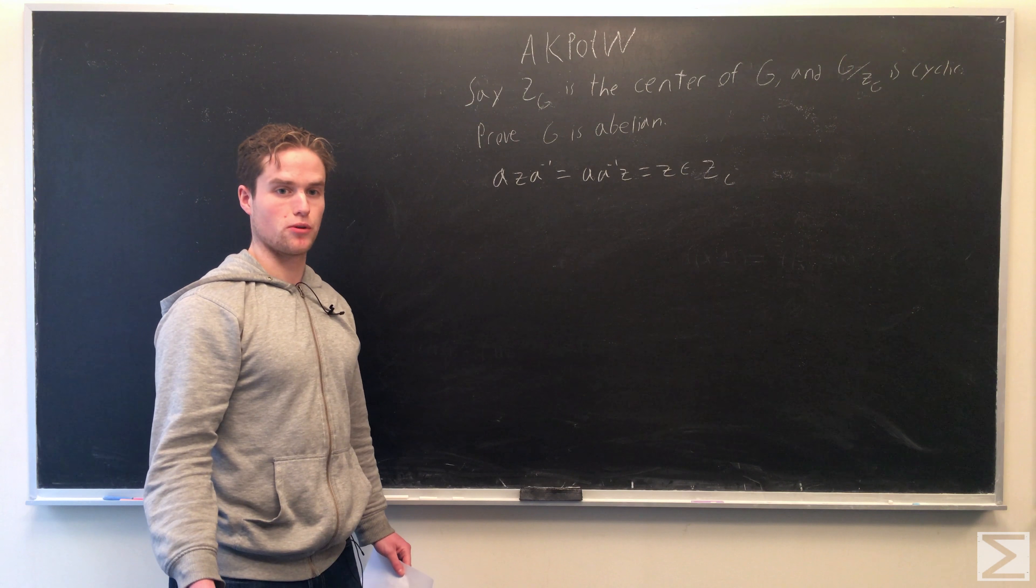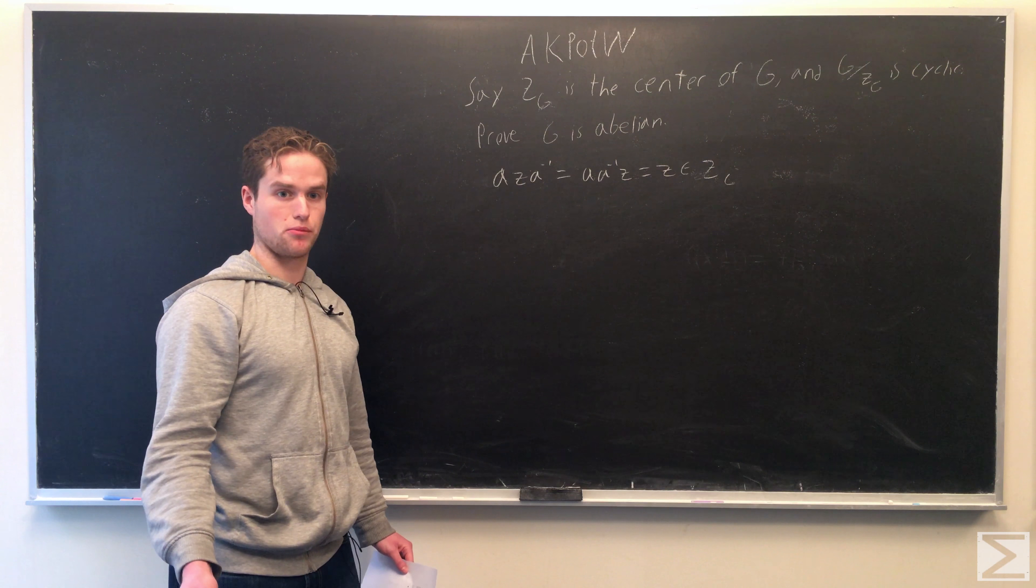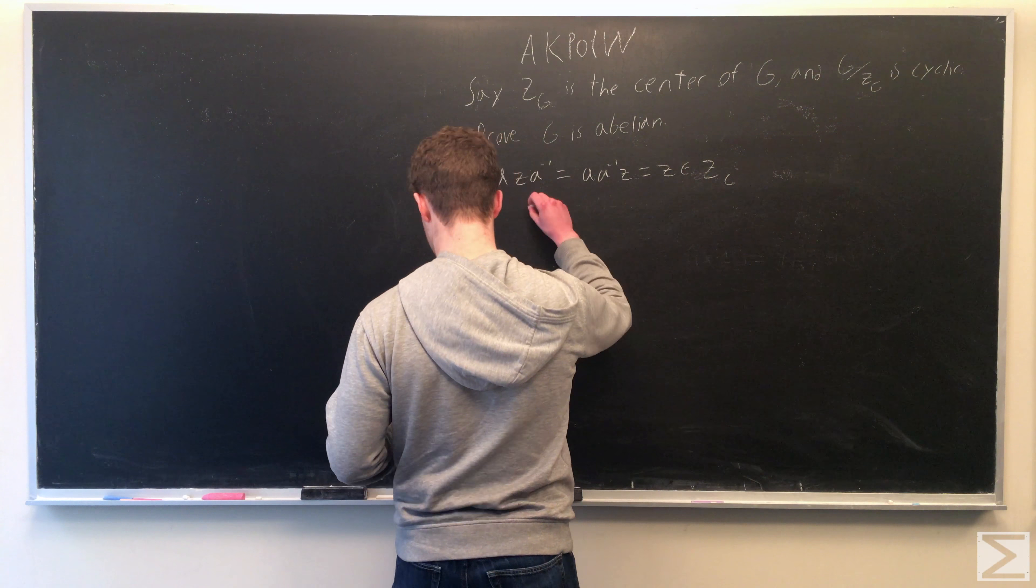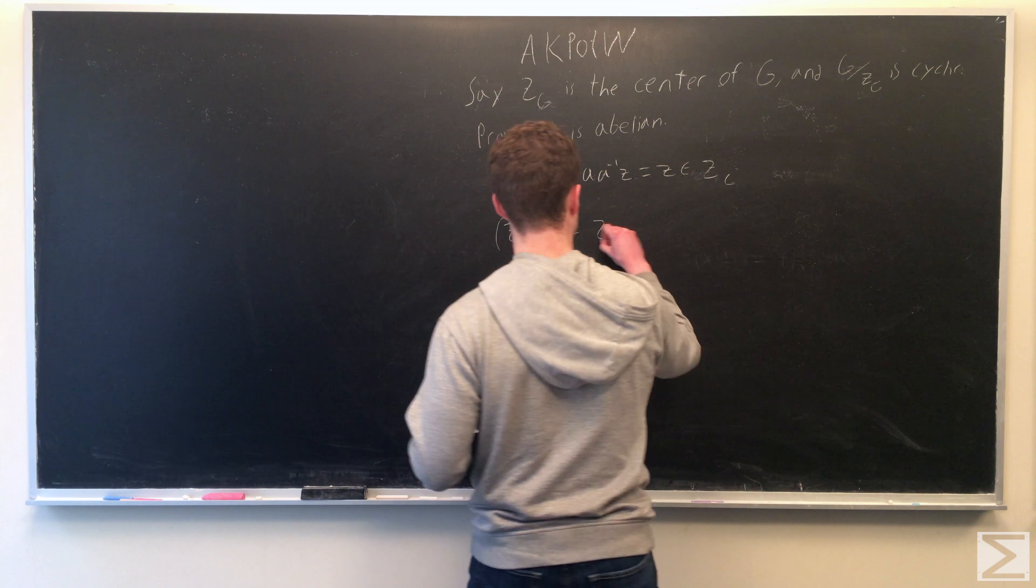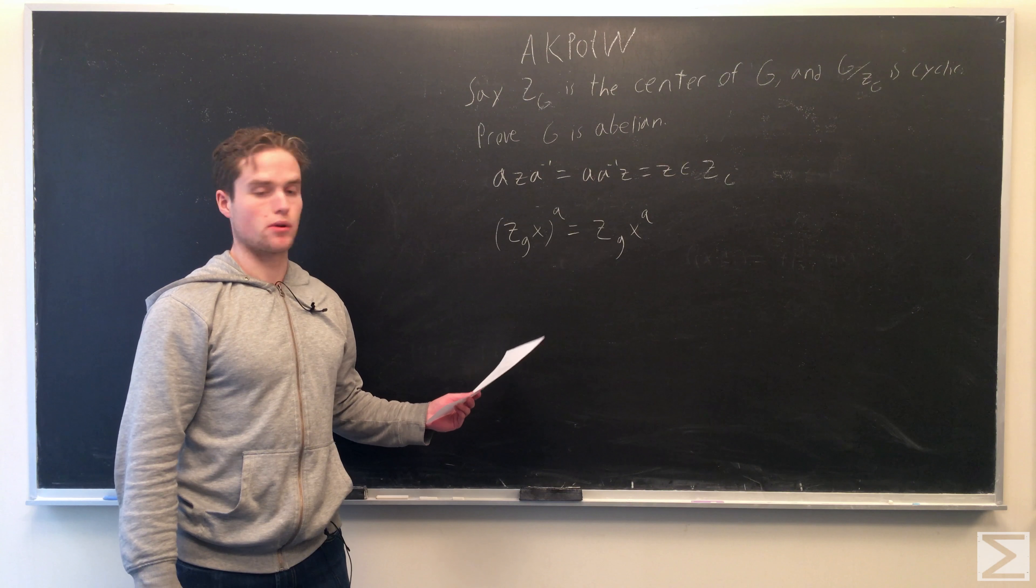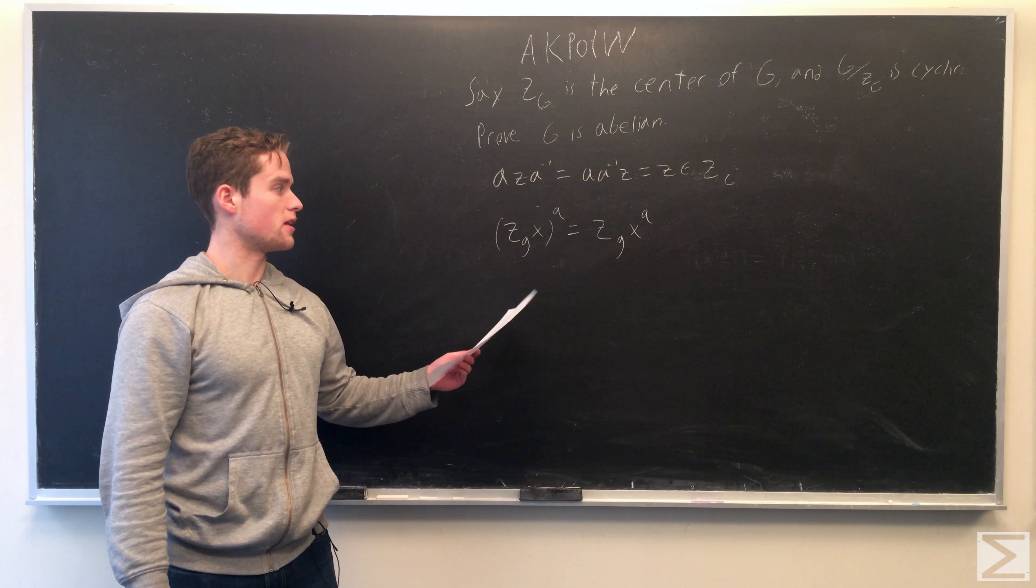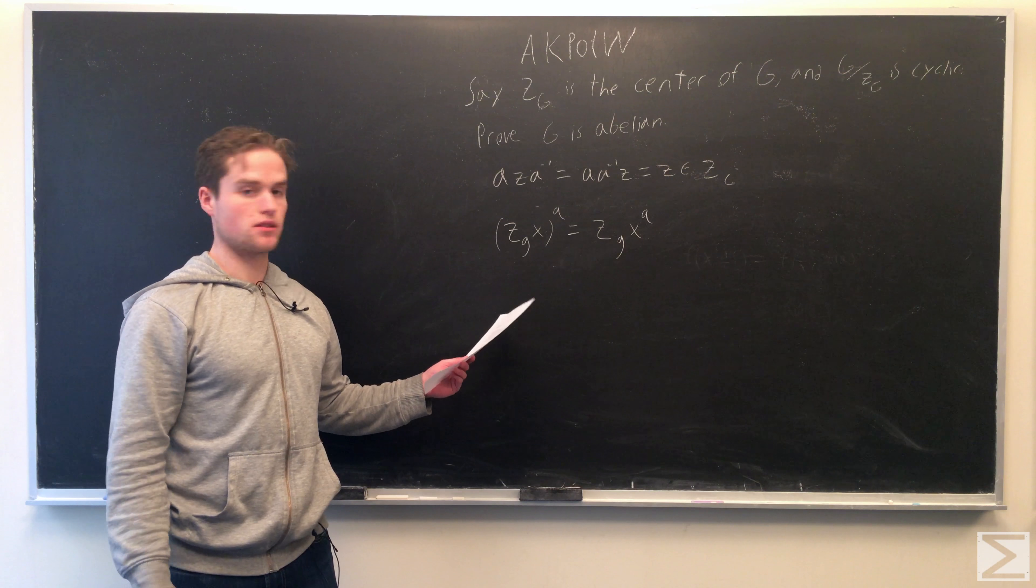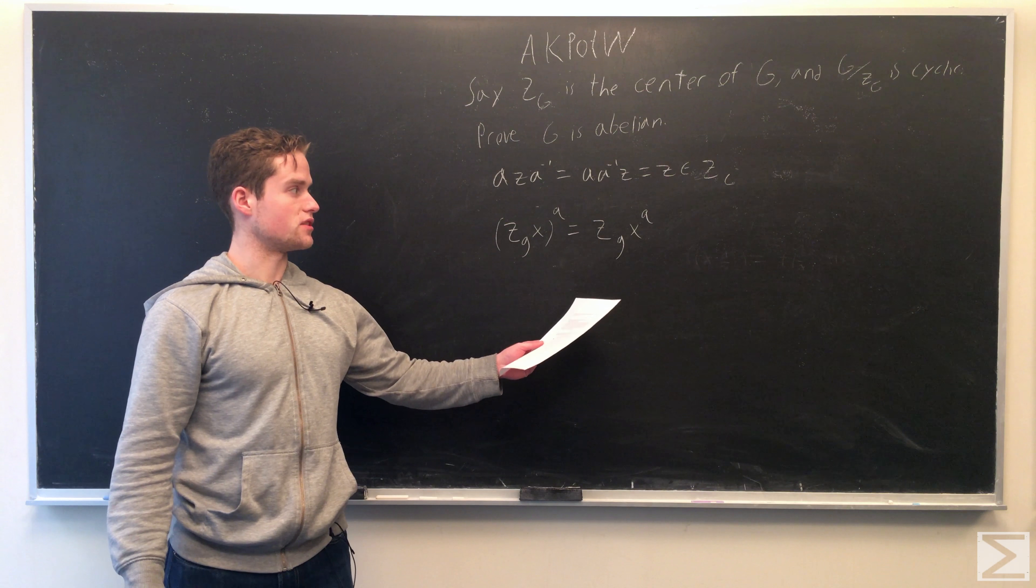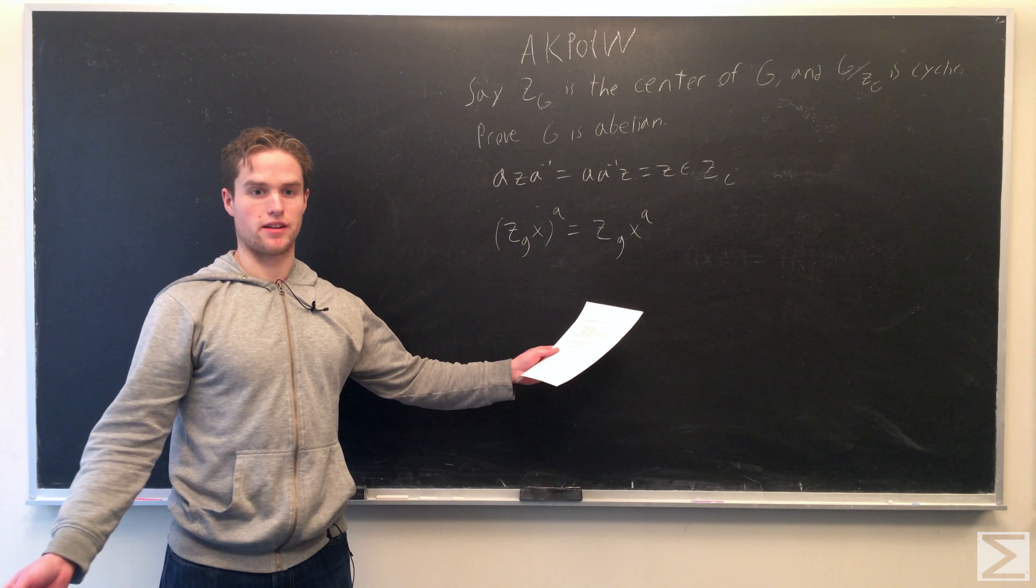So now that we know the group is normal, the quotient group is in fact a group. And we know it's cyclic, so every element of G quotient Z(G) can be produced by raising, there is some element that generates our group. And so Z(G)·X^Q, which equals Z(G)·X^Q, by varying Q, this produces all our elements.